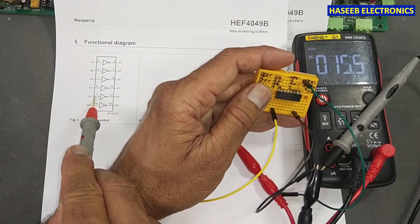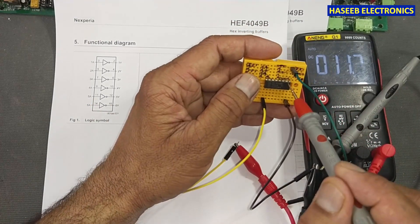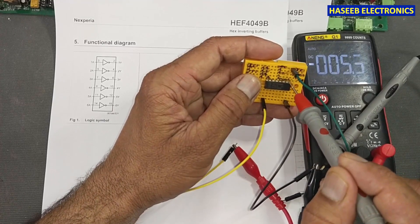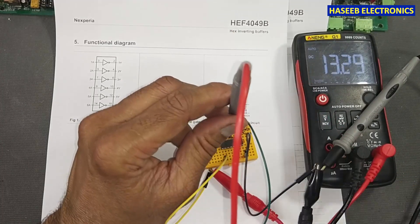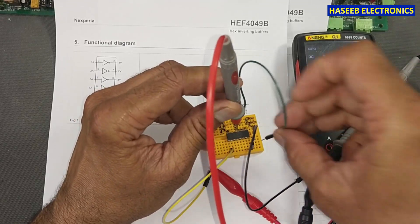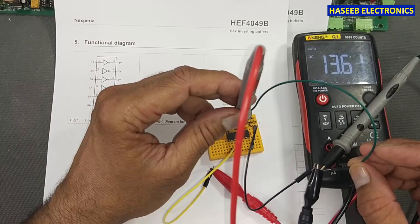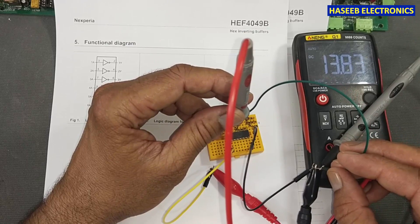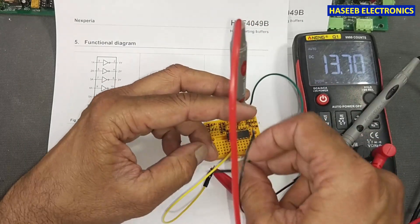Then pin 11 input, 12 output. Pin 12 is output, pin 11 is input. When I connect input to low, the output is high. When I connect input signal to high, the output is low.